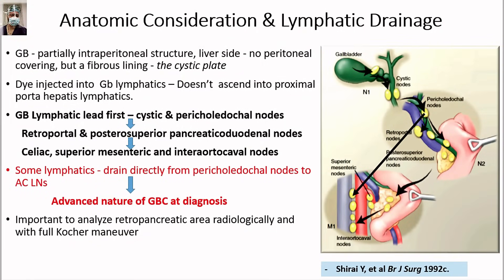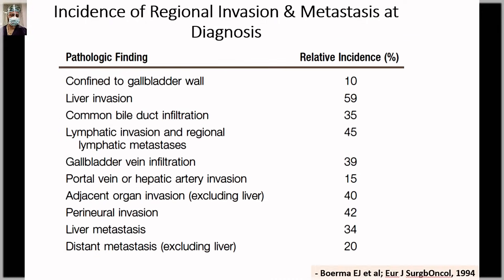These figures may be relevant for surgical examinations. Regarding the relative incidence of regional invasion and metastasis at diagnosis: only 10% of tumors are confined to the gallbladder; liver invasion is seen in 59%; common bile duct infiltration in 35%; portal vein and hepatic artery invasion in 15%. Most patients will have invasion of structures such as liver, common bile duct, lymphatics, or distant metastases.